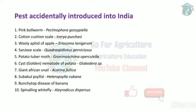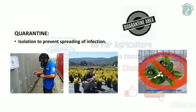These are the pests which were accidentally introduced into India. Next, we'll see what are the methods of legal control. The main method is quarantine — quarantine means isolation to prevent the spreading of infection.